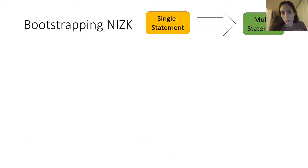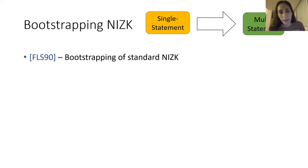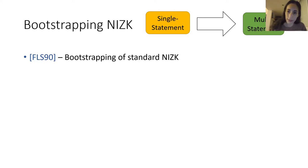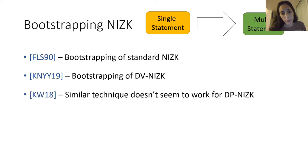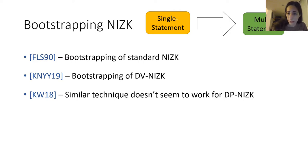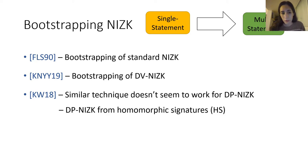This idea of bootstrapping a single statement to a multi-statement was first suggested in the famous FLS paper, which showed that for standard NIZK (a non-designated one), we can go from single statement to multi-statement in a generic way. Recently it was shown that a similar technique can be used in the designated verifier model, but it was also pointed out that the similar technique doesn't seem to work in the designated prover model. Kim and Woo showed that generic bootstrapping is not possible, but they showed how to directly construct a DP-NIZK scheme using homomorphic signatures.